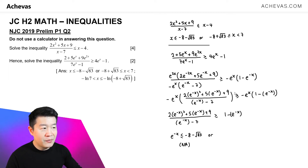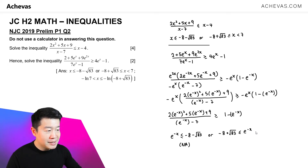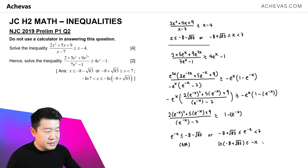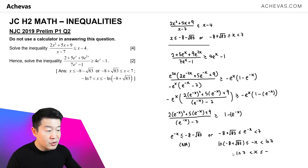So we take the other region: minus 8 plus square root of 83 is less than or equal to e to the power of minus x, strictly less than 7. Taking the natural logarithm of all parts gives ln of minus 8 plus square root of 83, less than or equal to minus x, strictly less than ln 7. Multiplying throughout by negative 1 and swapping the inequality, x is greater than minus ln 7, and less than or equal to the negative of ln of minus 8 plus square root of 83.